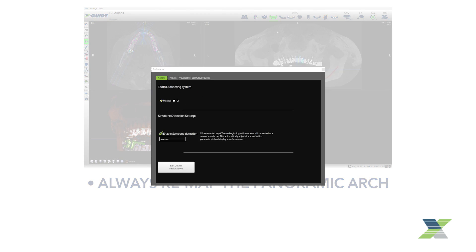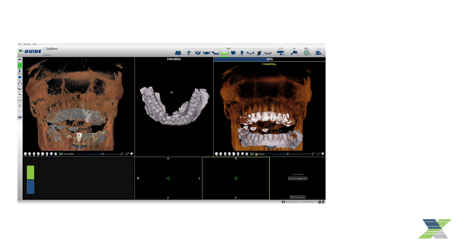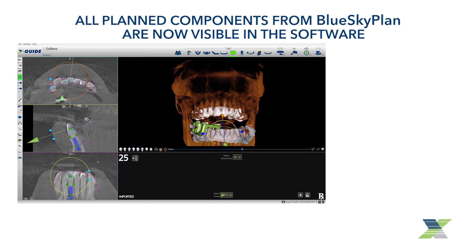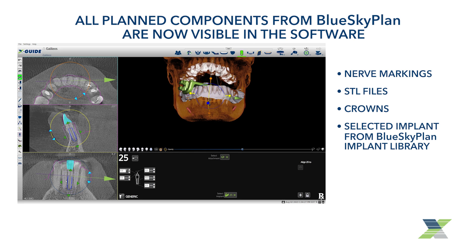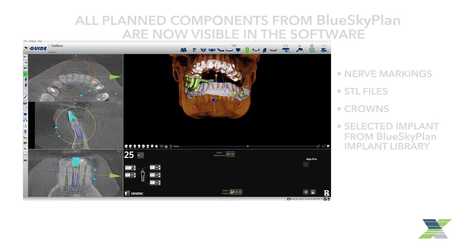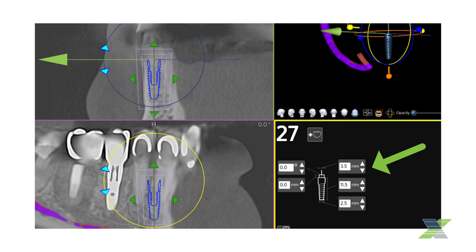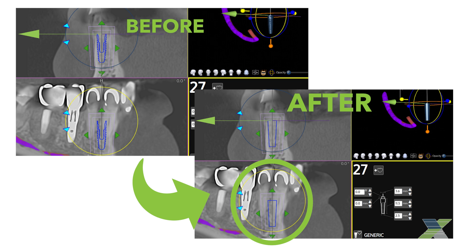Remember, the tooth number will reflect what you have selected in your XGUIDE preferences, either the universal or FDI tooth numbering system. Once mapping of the arch is completed, notice all the plan components from Blue Sky Plan are visible in the XGUIDE software, including nerve markings, any imported STL files, crowns, and the selected implant from the Blue Sky Plan implant library. You can edit any part of the plan if desired, although if you change the dimensions of implants imported from Blue Sky Bio, the implant converts to the XGUIDE generic implant shape.